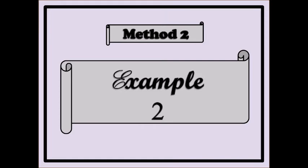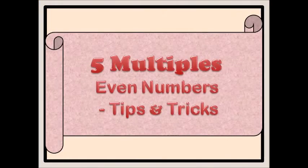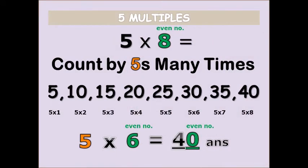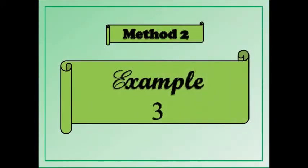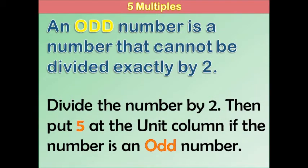Method two, five multiples, even numbers — tips and tricks. We have five times eight. Eight is an even number. So you count five many times: five, ten, fifteen, twenty, twenty-five, thirty, thirty-five, forty. So you add the number to itself and you get the answer.